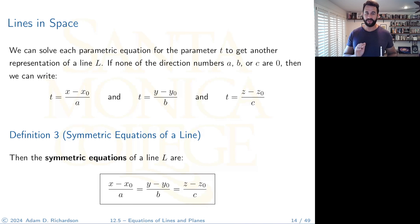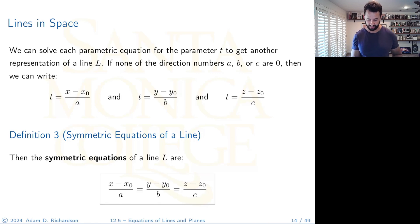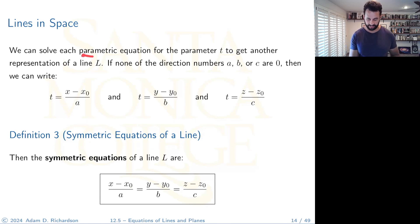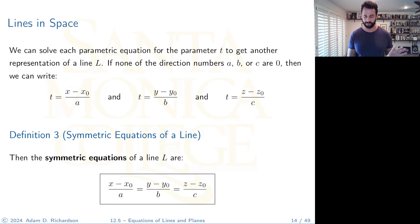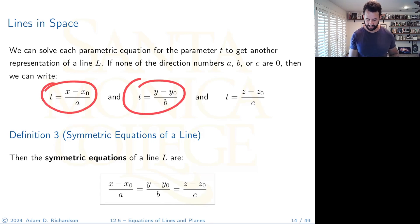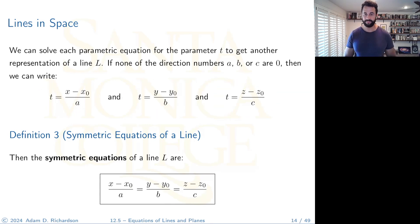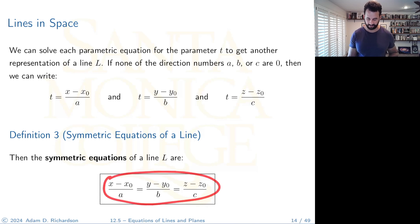Here is another form: the symmetric equations of a line. Take each parametric equation and solve for the parameter t. Assuming none of the direction numbers are zero, you get (x − x₀)/a = (y − y₀)/b = (z − z₀)/c. Setting all three expressions equal gives the symmetric equations.